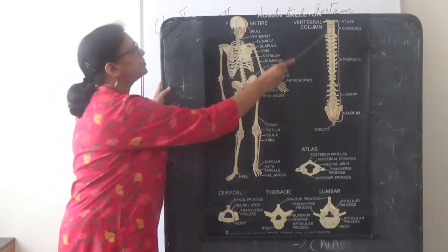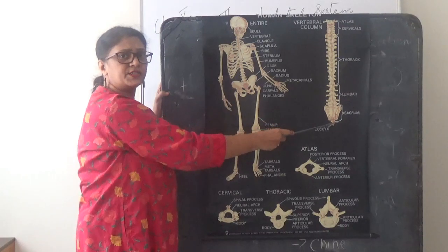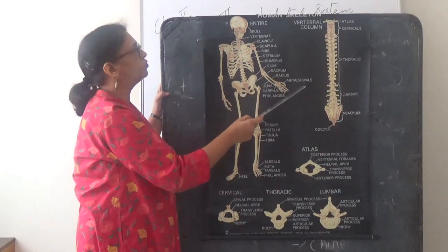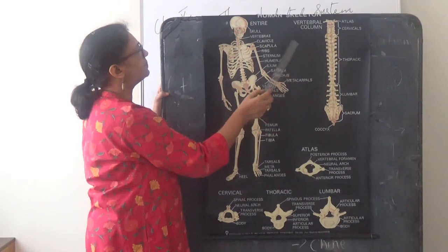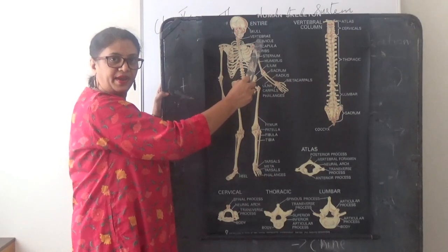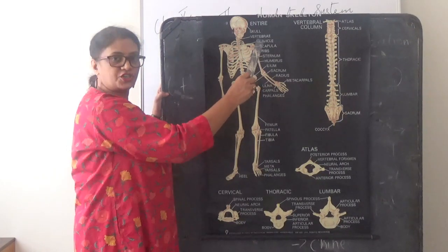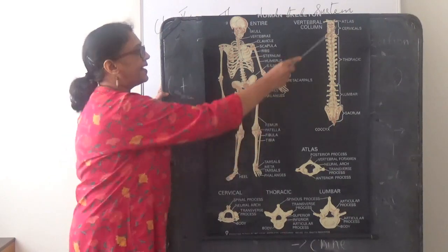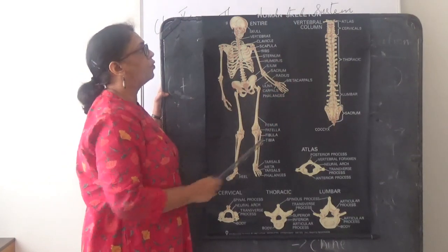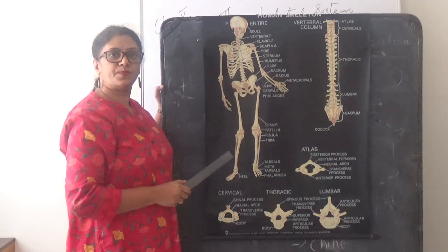Next we come to the backbone. The backbone is made up of thirty-three small bones called vertebrae. Each of the vertebrae has a hole through which passes the delicate spinal cord. So the backbone, or vertebral column, protects the spinal cord.